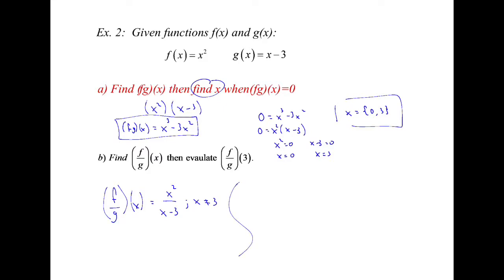The next part asks us to find f divided by g of 3. But from what we just said, x can't equal 3. So if you try to plug this in, you'll get 3 squared over 3 minus 3, which is 9 divided by 0. We know that's undefined. So f divided by g of 3 does not exist because x equals 3 is not part of the domain.